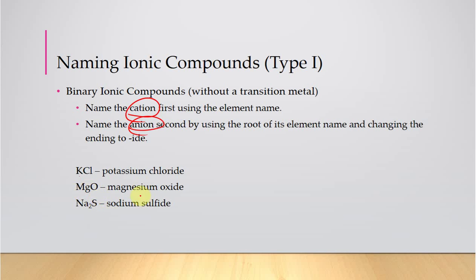For MgO: Mg is magnesium, oxygen becomes oxide. Na2S: Na is sodium, sulfur becomes sulfide. We are not dealing with the numbers — it doesn't matter. There's only one way for these to come together, so all we have to do is name them by their name. And we're also going to be working a little with acids and bases here.